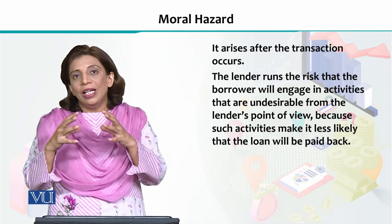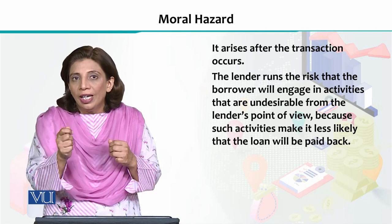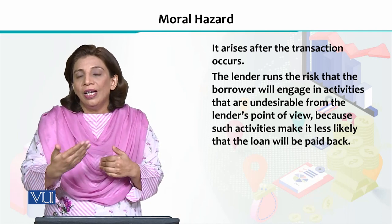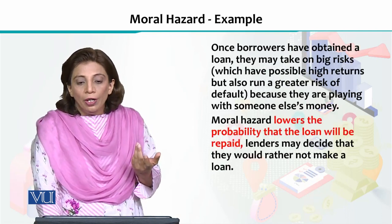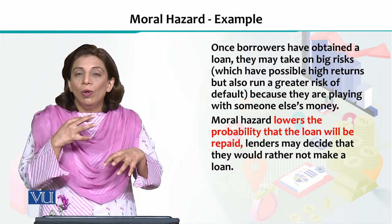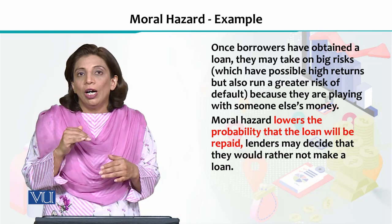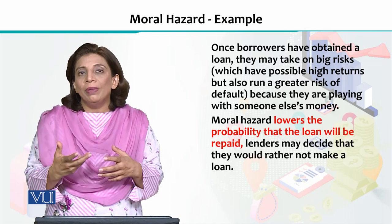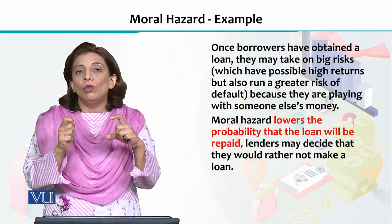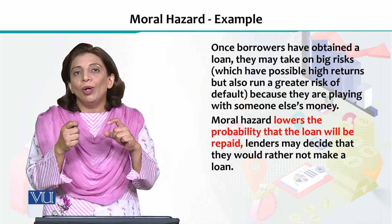Generally, people take greater risks with other people's money. When people borrow money and invest it in riskier activities, the financial institution faces asymmetric information, which can lead to adverse selection. Moral hazard lowers the probability that the loan is repaid, as the borrower's attitude becomes prone to greater risk-taking. In response, banks say they cannot tolerate moral hazard, so the terms and conditions of lending are tightened. However, tight conditions also negatively affect those who have not exhibited moral hazard.